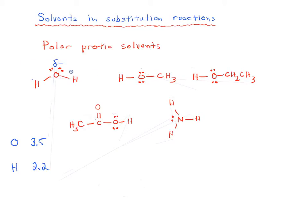When oxygen and hydrogen are bonded together, oxygen pulls a lot of electron density towards it. In the bond between oxygen and hydrogen, we get a partial negative charge on the oxygen and a partial positive charge on the hydrogen. This leads to adjacent opposite charges, which is called a dipole. This is actually part of the reason why these are called polar protic solvents — because of this dipole.